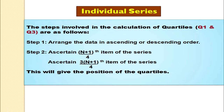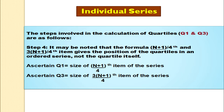When we compute quartiles in case of individual series, the steps are as follows. Step 1: arrange the data in ascending or descending order — normally we arrange in ascending order. Step 2: for the first quartile we find the (n+1)/4th item, and for the third quartile it would be the 3(n+1)/4th item of the series. This gives us the position of the quartiles in the ordered series.